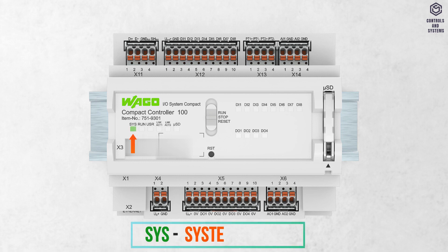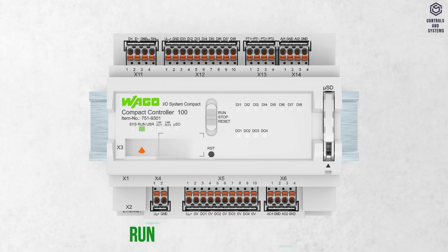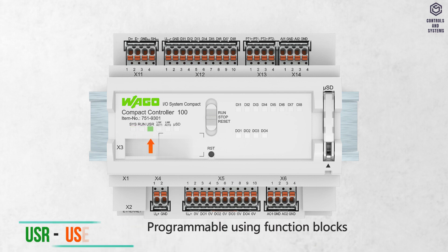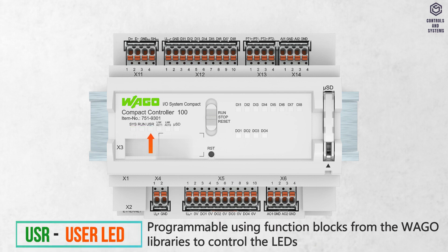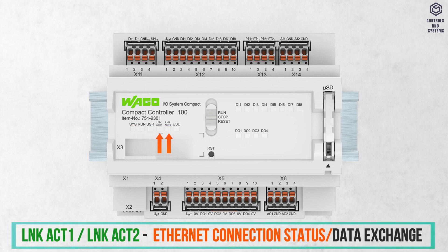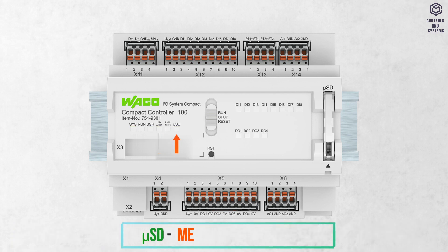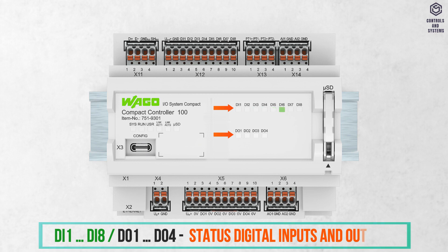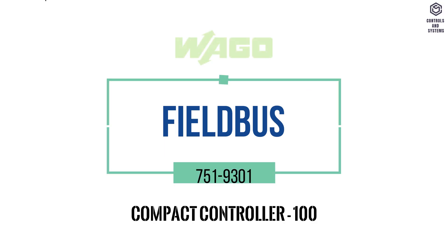System LEDs: SYS LED is for system status. RUN LED is for PLC program status. USR LED is for user LED status. LNK/ACT 1 and 2 LEDs are for Ethernet connection status or data exchange. MST LED is for memory card status. DI1 to DI8 and DO1 to DO4 LEDs are for status of digital inputs and outputs.